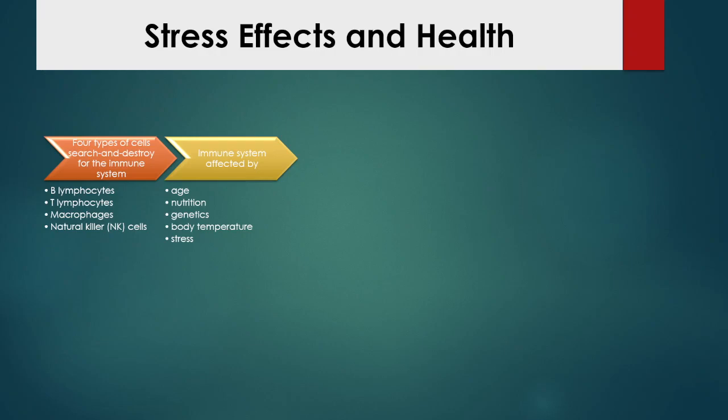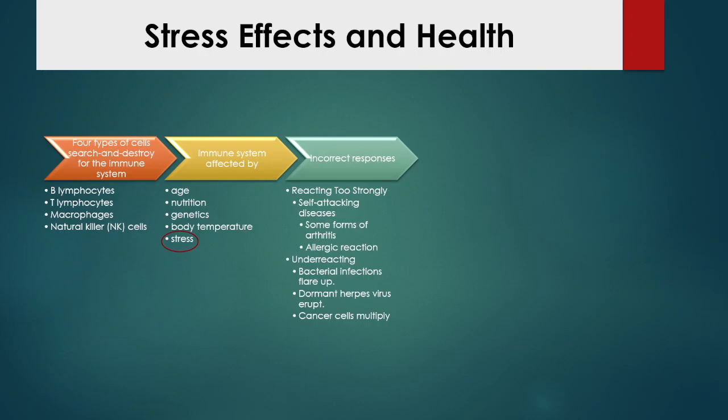Nutrition plays a role — if you're not eating properly. Genetics plays a role — some people's genes make their immune systems more effective than others. Body temperature is also a factor. And then of course, stress — using sadness as a type of stressor is what we want to focus on. Some of the incorrect responses our immune system can have: one is to react too strongly. Some of you may have autoimmune disorders — self-attacking diseases. Certain kinds of arthritis like rheumatoid arthritis, allergic reactions, eczema, Crohn's disease — these are all examples of when our immune system is too strong. We're starting to recognize the problem with having too strong an immune system if it's going to attack ourselves.